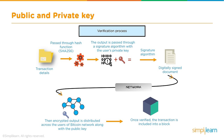When you initiate a transaction, it is passed through SHA-256. The output is passed through a signature algorithm with the user's private key to receive a digitally signed document. This digitally signed document plus the public key is then floated on the network. Miners use the digitally signed document and public key to verify the transaction. Once verified, the transaction is included in the block and marked as completed.